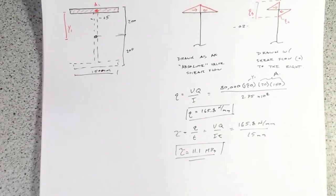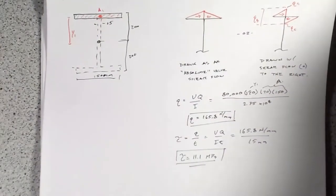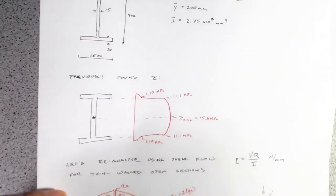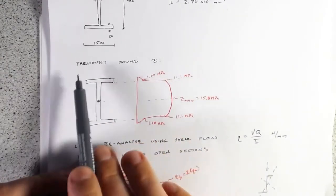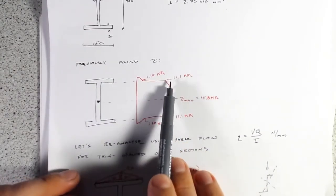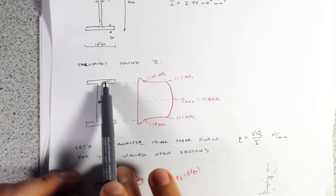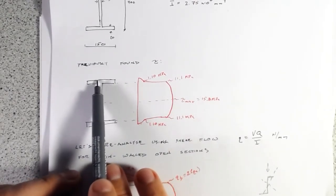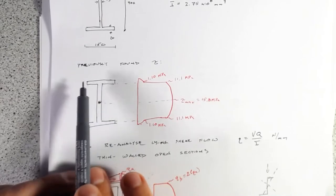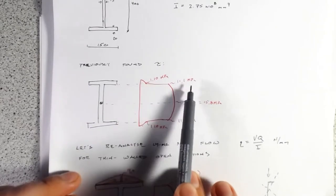Working out the shear stress: tau equals Q divided by T. But the T we're looking for here, because we're looking at the shear in the web, is 15 millimeters. So we get 165.8 divided by 15, giving tau equals 11.1 MPa. This is the exact same value we got when we looked at the previous shear stress distribution where we brought Q coming down from the top without considering the flanges — we got 11.1 MPa there too.